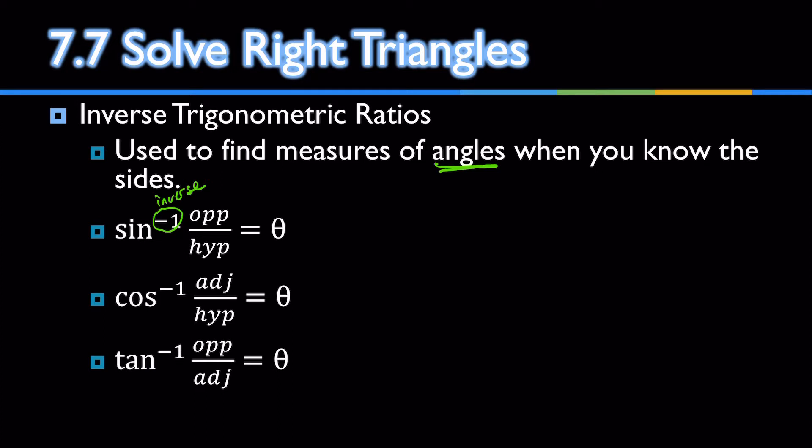Otherwise, it's the same. Sine is opposite over hypotenuse. Cosine is adjacent over hypotenuse. Tangent is opposite over adjacent still.